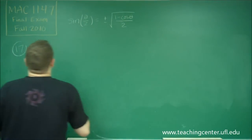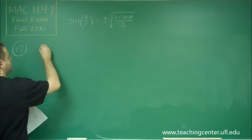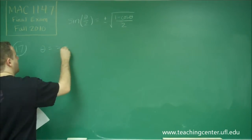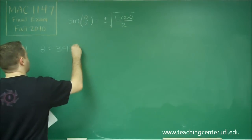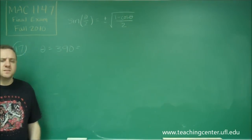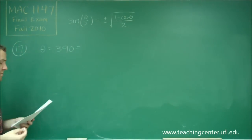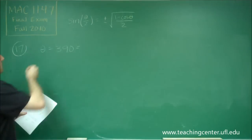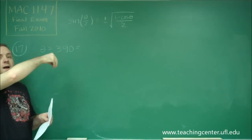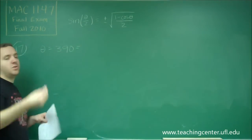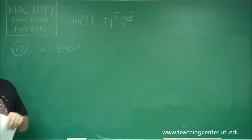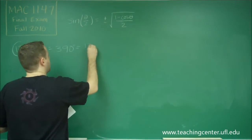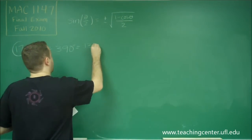So what we need to do is use this formula with theta equals 390, but let's convert that to radians because that's easier and more useful. That's 360, in other words 2 pi, plus an additional 30, which is pi over 6. So this is 13 pi over 6.